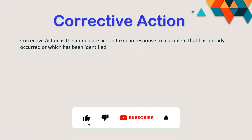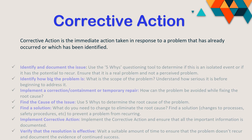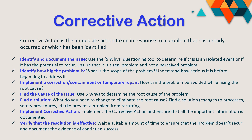Now let us see what corrective action is. Corrective action is nothing but an immediate action taken in response to a problem or a quality issue that has already occurred and which has been clearly identified. So whatever action we take to correct a particular issue is called corrective action.